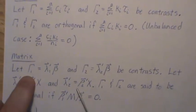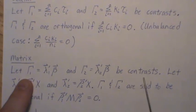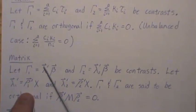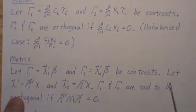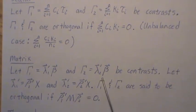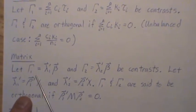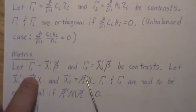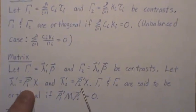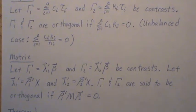In matrix form, gamma one is a linear combination of the betas and gamma two is a linear combination of the betas — they're contrasts. The first component of lambda must be zero so we don't pick up the mu parameter. Since they're contrasts and estimable, the lambdas can be written as a linear combination of the row space of the design matrix. Gamma one and gamma two are said to be orthogonal if rho one prime M rho two prime equals zero.